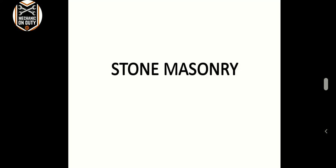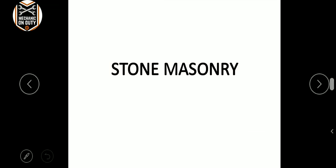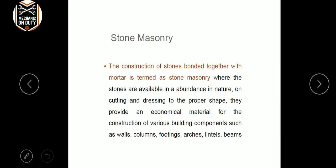Stone masonry is nothing but construction — brick mold construction. The construction of stones bonded together with the mortar is formed as stone masonry. The stones are available in abundance in nature. On cutting and dressing to proper shape, they provide an economical material for construction.